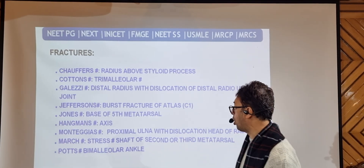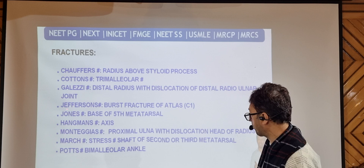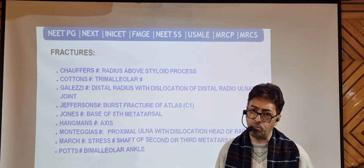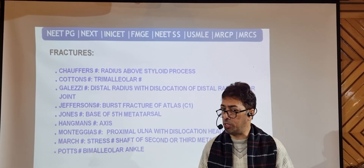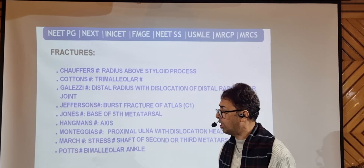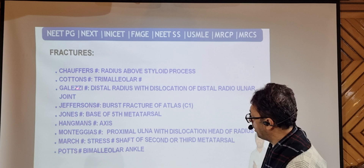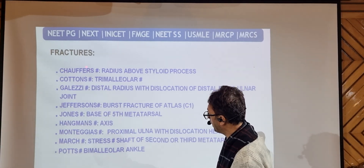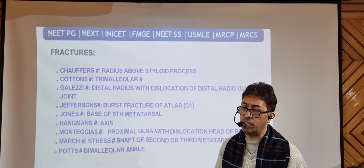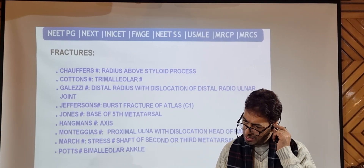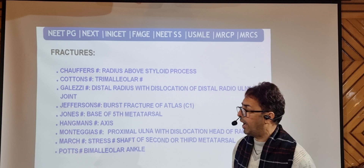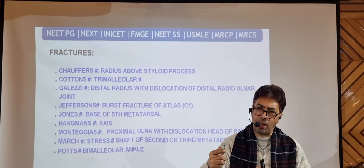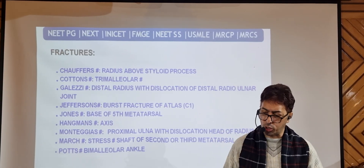Regarding fracture eponyms: Chauffeur's fracture involves a fracture of the radial styloid process of the radius in the upper limb. In the lower limb, Colton's fracture is the trimalleolar fracture involving the tibia, fibula, and malleolus. When only two malleoli are fractured — bimalleolar — that is called Pott's fracture. So remember the difference: trimalleolar is Colton's and bimalleolar is Pott's.